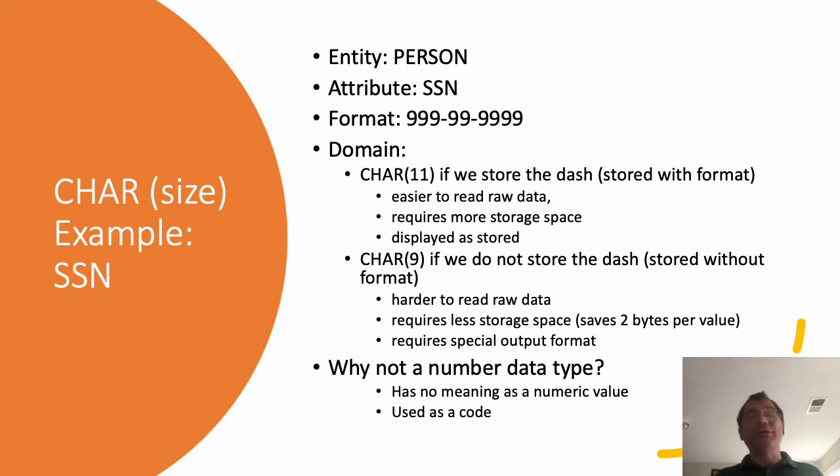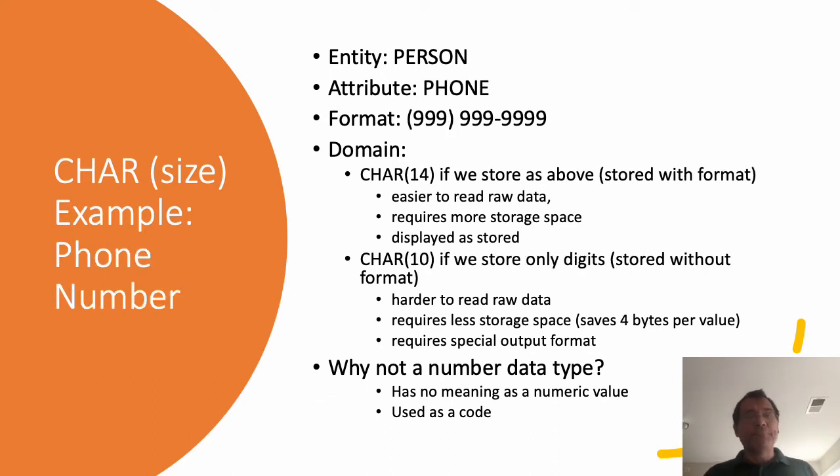Now another question you might have: it's a number, why don't we store it as a number? Why do we store it as text? Now as a number it has no meaning. Initially there was some meaning to this number, each group had a different role. Currently there is no such meaning associated with the numbers, and it mostly uses a code. So I don't do mathematical operations with social security numbers, it's just a code, an identifier for the person. Because of that, we don't usually use a number type, and we use a character type for social security.